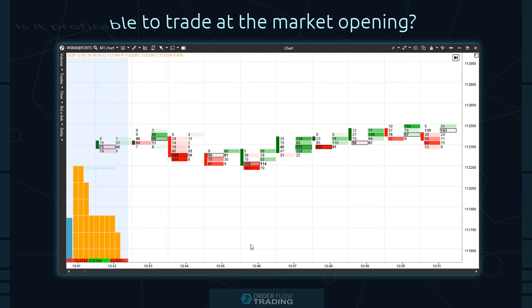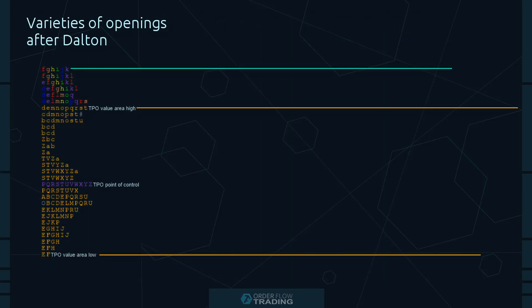Let's speak about open drive types. From the perspective of the market profile, the beginning of a trading session is the first trading hour — the time when two initial balance periods, 30 minutes each, are formed. The trading session opening may look as follows.